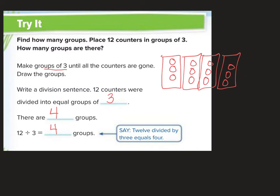Did you guys notice something? The other one was 12 divided by 4 equals 3, and now this one is 12 divided by 3 equals 4. We did a flip-floppy thing — our divisor and our quotient are the names of those two numbers. But 12 remained in the front, and 12 is called our dividend.